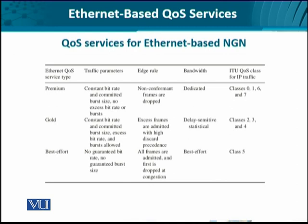The QoS service types for Ethernet are regarded as best effort being the simplest and the lowest in quality, followed by gold, and premium being the best of all. These are categorized on the basis of the traffic parameters which have their own quality related attributes, the edge rules applied at the boundary, the bandwidth profile, and to which particular QoS class of the ITU each service type belongs to.